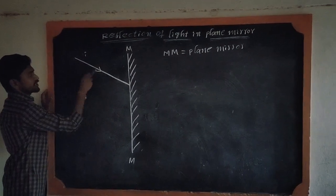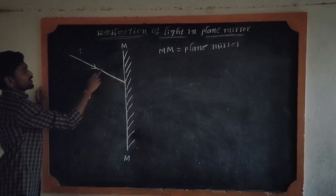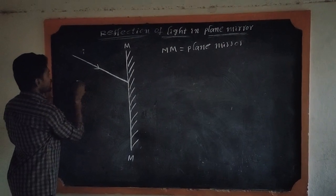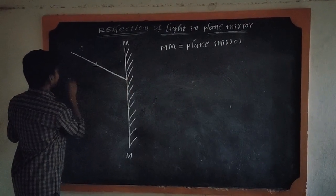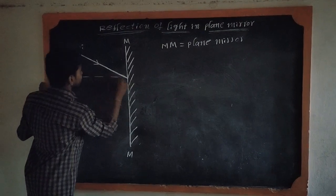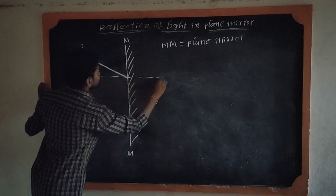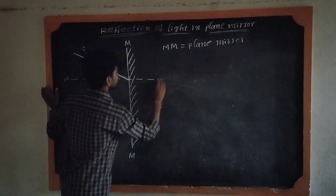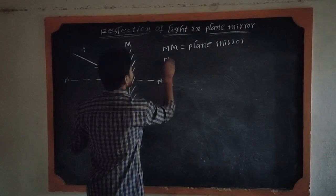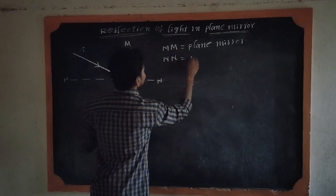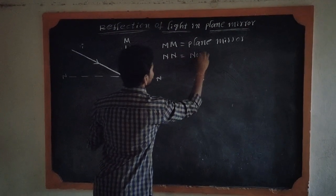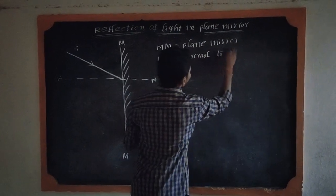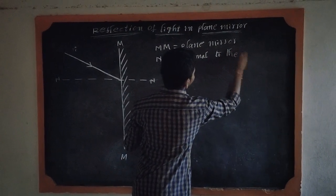When the incident ray meets the mirror, it forms a normal. The normal is always perpendicular to the surface. This is the normal — normal to the plane mirror.